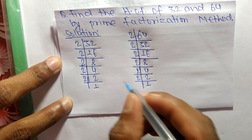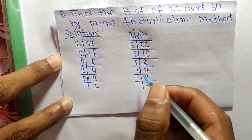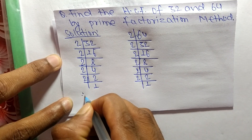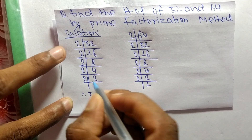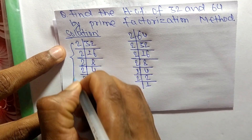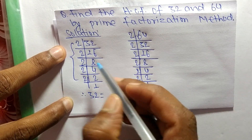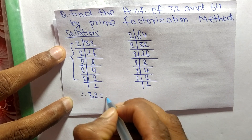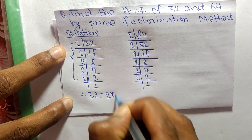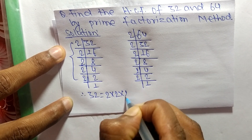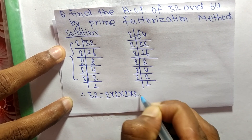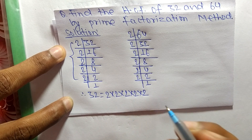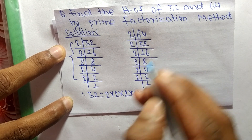And 2 times 1 means 2. So from these prime factors, we can write 32 is equal to — counting from this part — 2 multiplied 5 times, so 32 = 2⁵.